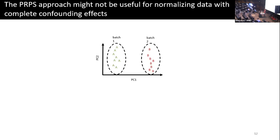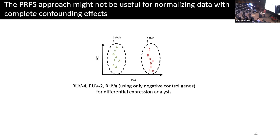If you have complete confounding — one biology in one batch, another biology in another batch — it's going to be a headache. RUV3PRPS is probably not going to work because if you average A here and B there, there's going to be some biology in those PRPS as well. In this case, I would recommend using RUV4, RUV2, or RUVG just for differential expression analysis, not for normalization.